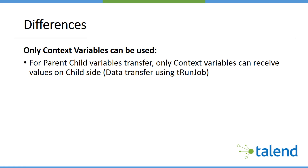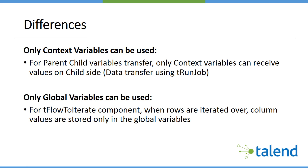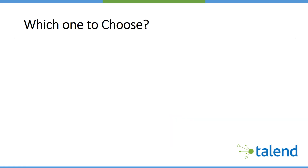Looking at the differences: the most prominent difference for context variables is around parent-child data transfer. When transferring data between a parent job and a child job, only context variables can receive values on the child side. For global variables, the most prominent difference involves the tFlowToIterate component — when iterating over rows, column values are always stored in global variables, making them accessible to all components ahead of the tFlowToIterate component.